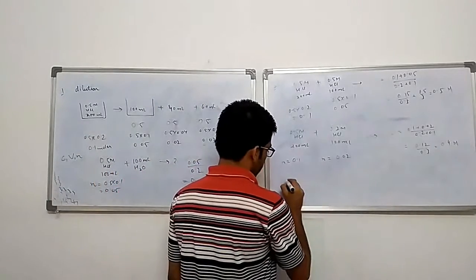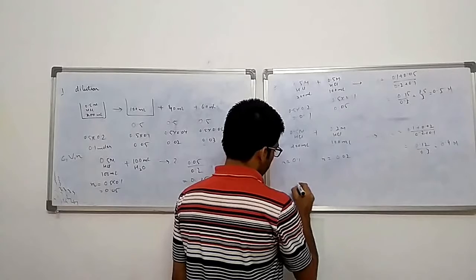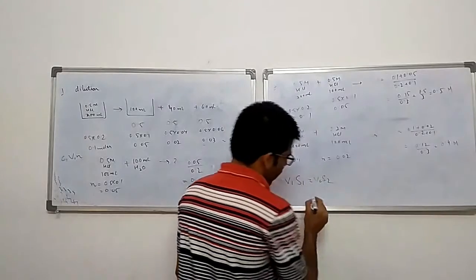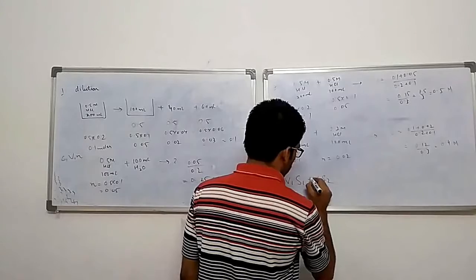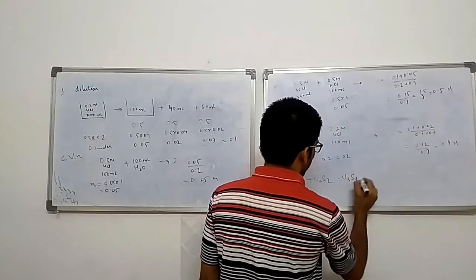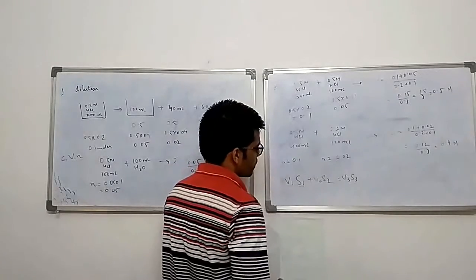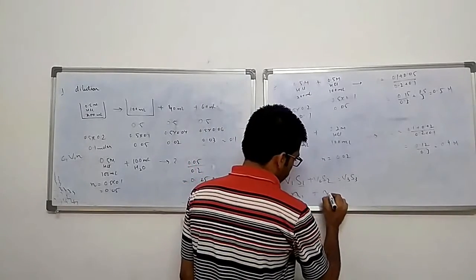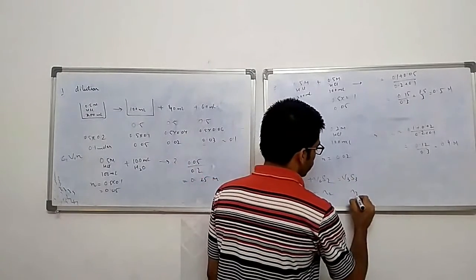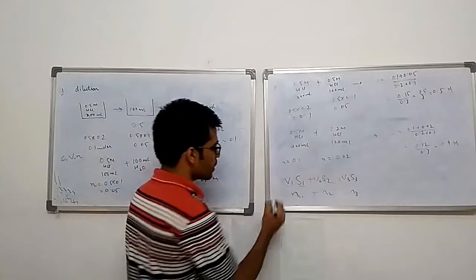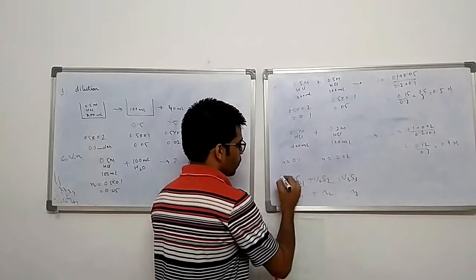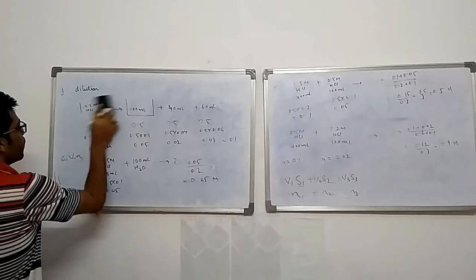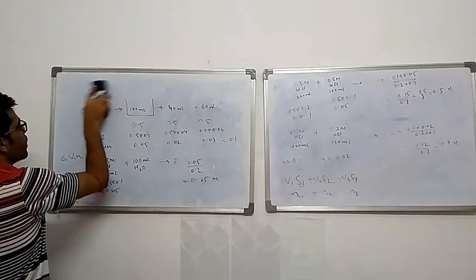One formula we often use is V1S1 = V2S2, or V1S1 + V2S2 = V3S3 for mixing cases. Where V is volume and S is concentration. Multiplying V×S gives the number of moles in each solution, and the total moles must be conserved. This is how you derive the formula — from conservation of moles. You put in the known values and find any unknown from here. This is what we use for finding the strength in an acid-base titration.